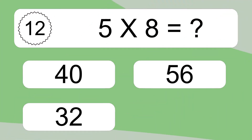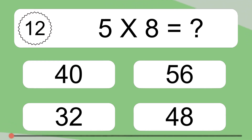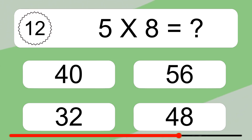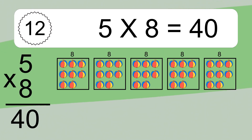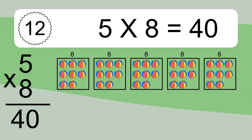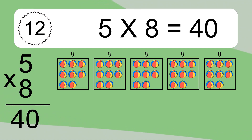5 times 8 equals what? 5 times 8 equals 40. We have 5 boxes and each box has 8 colorful balls inside. If you count all the balls in all the boxes together, you will have 5 times 8 balls. This equals 40 balls.